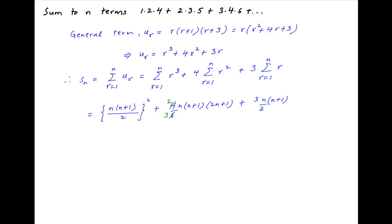Now take n(n+1)/12 as a common factor, multiplied by 3n(n+1) + 8(2n+1) + 18.